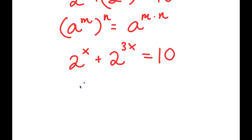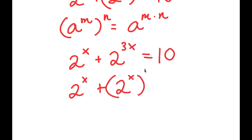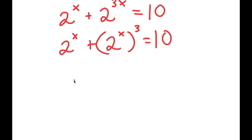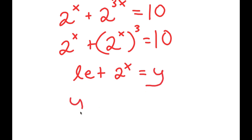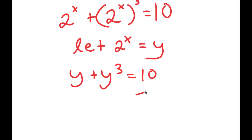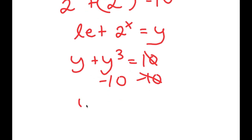I can rewrite this as 2 to the power of x plus 2 to the power of x to the power of 3 is equal to 10. Now I'm going to let 2 to the power of x equal to the variable y. So I get y plus y to the power of 3 is equal to 10. If I subtract 10 on both sides, I get y to the power of 3 plus y minus 10 is equal to 0.